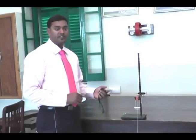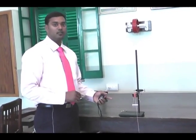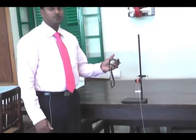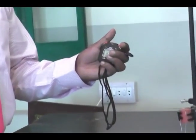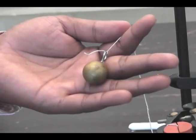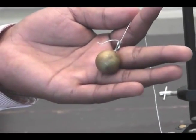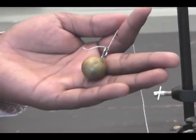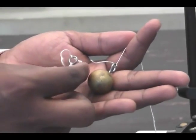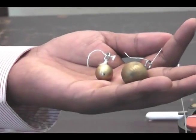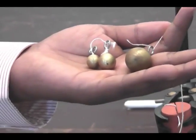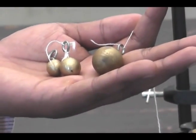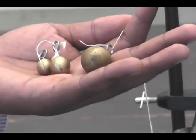Just as in Part 1, we set the pendulum in vibration and note the time for 20 vibrations, filling in the table of observations and calculations. After the first observation, we replace the bob with one of a different mass, and for the third observation, we use yet another bob of different mass, recording the time for 20 vibrations each time.